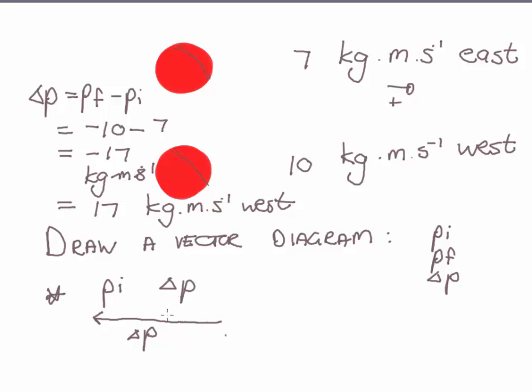Then I draw PI after that. So PI was plus 7 kilograms meter per second. That's going to be my second vector that I draw. And this value of 7 is PI.